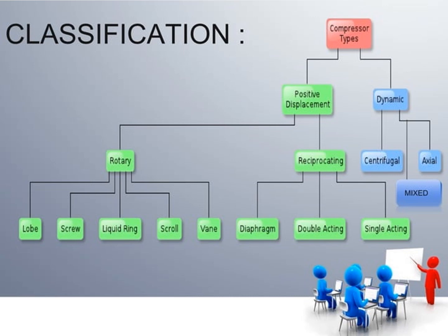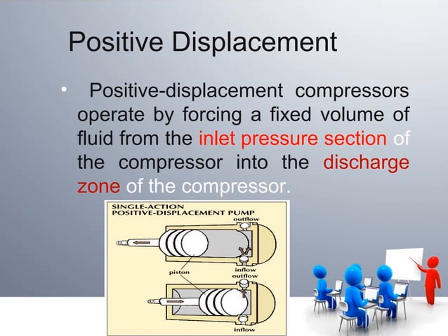Here are the classifications of compressors. There are two main types: positive displacement and dynamic compressors. Under dynamic compressors, there are centrifugal and axial compressors, and a combination is called a mixed compressor. Under positive displacement, there are rotary and reciprocating types. Reciprocating compressors include diaphragm, double acting, and single acting types. Rotary compressors include lobe, screw, liquid ring, scroll, and vane types.